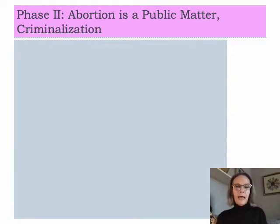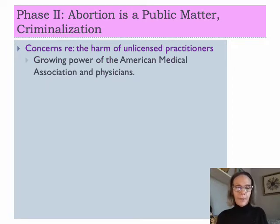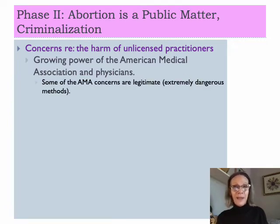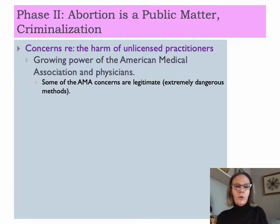One concern was the harm of unlicensed practitioners. This is a time period when we see the rise of the professional class of physicians and the power of the American Medical Association. People who are not licensed to practice medicine can engage in harmful practices. At this time, many people were engaging in abortions and advertising for them, using horrible poisons that resulted in great harm to women. So the AMA wanted to criminalize abortions, particularly for those who did not have a license to practice medicine.